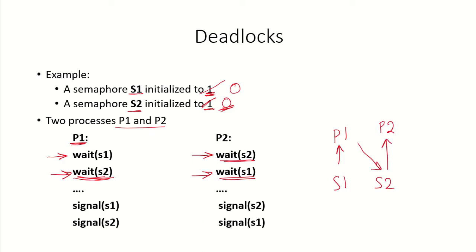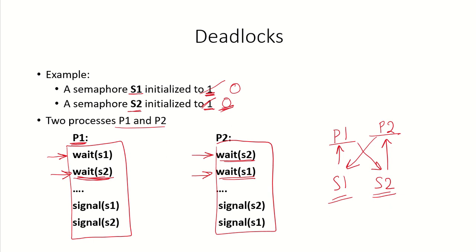Now p1 is holding s1 but requesting s2, and s2 is being used by p2, while p2 is waiting for s1. Each of the two processes is holding one resource and waiting for another resource held by the other process. If p1 had run to completion before p2 started, deadlock would not have occurred. But because of the context switch, p1 holds s1 and p2 holds s2, and each is waiting for the other's semaphore — resulting in a deadlock.